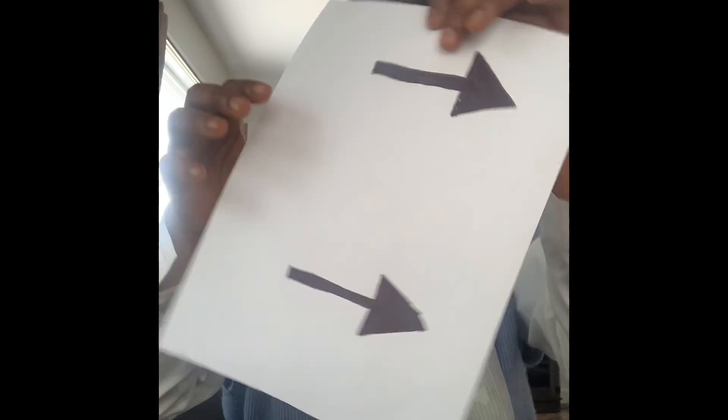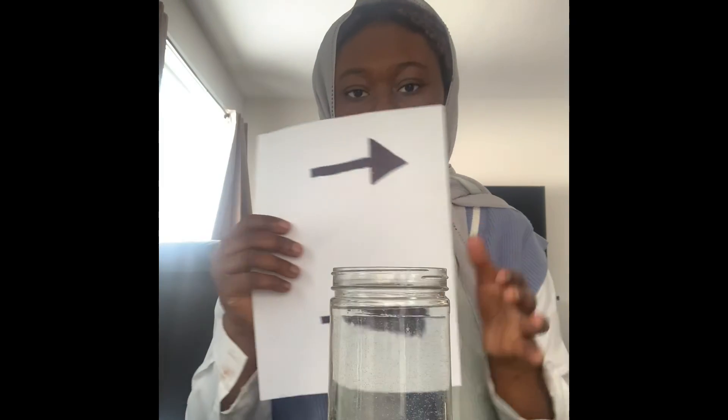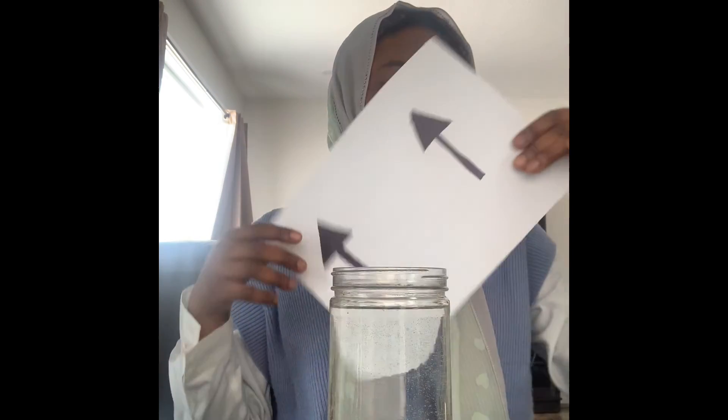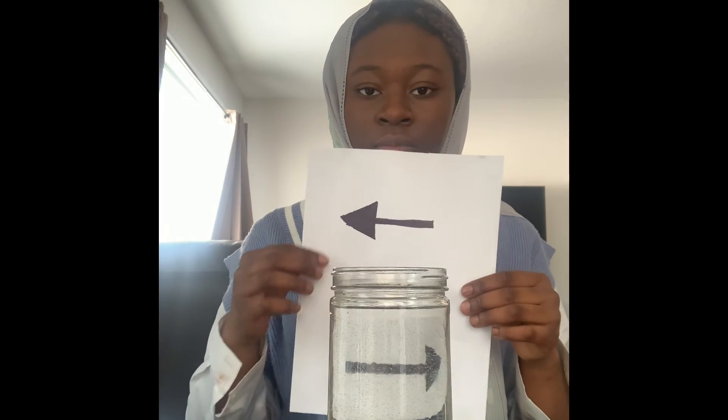On a sheet of paper, I drew two arrows both facing the same direction. I then placed this sheet behind a clear container full of water, with one arrow behind the jar and the other above the jar. The arrow that is behind the jar is now facing the opposite direction.